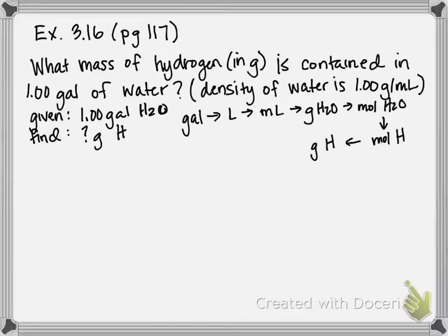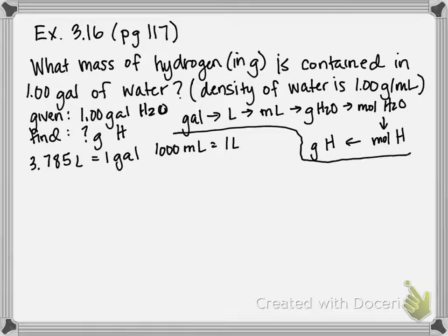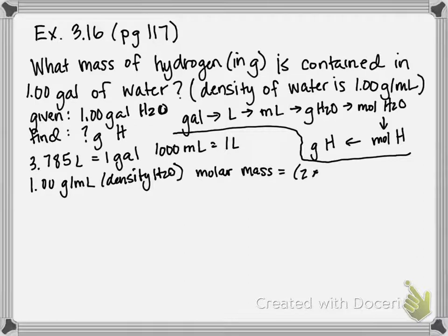So this is going to be a long conversion step process to get starting from grams of water to grams of hydrogen. Some conversion factors I'm going to be using: there are 3.785 liters in one gallon, and we know there are 1,000 milliliters in one liter. Draw a separating line there so we don't get confused. We know that the density of water is one gram per mil. We're also going to need the molar mass of water so let's go ahead and calculate that. Molar mass of water is going to be 2 times hydrogen's molar mass plus 1 times oxygen's molar mass to give us molar mass of 18.02 grams per mole.